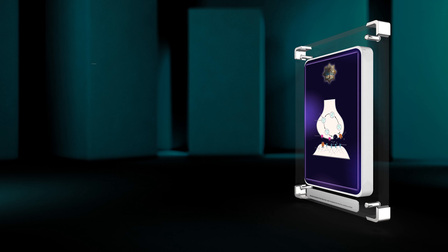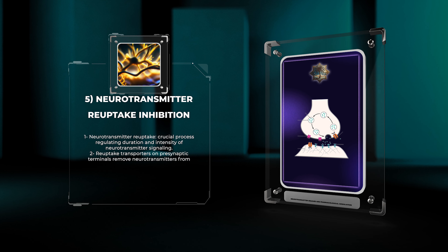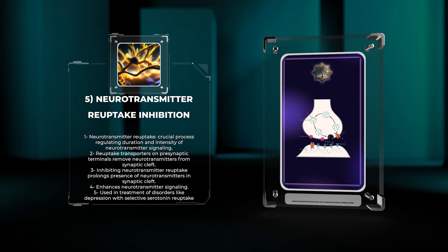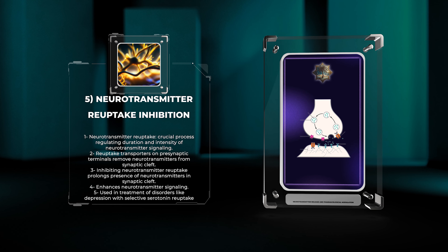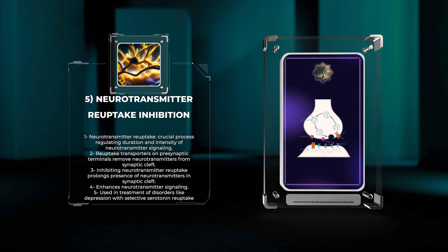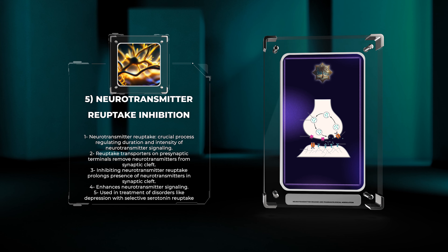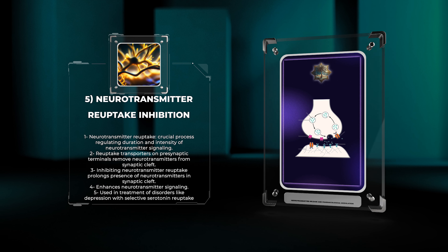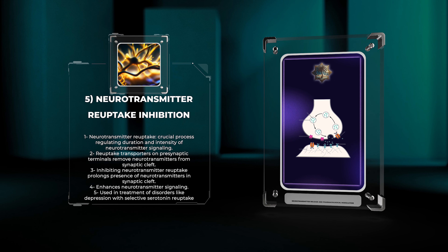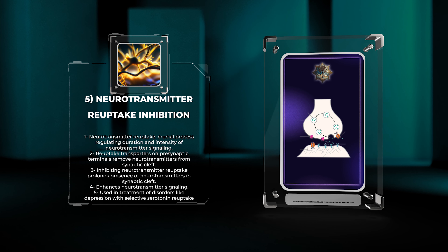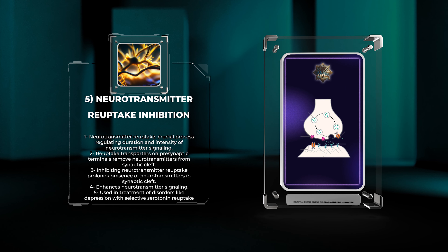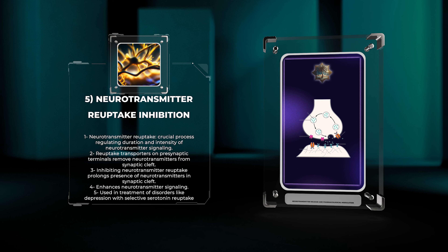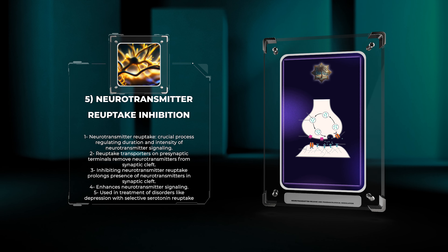Neurotransmitter reuptake is a crucial process that regulates the duration and intensity of neurotransmitter signaling. Reuptake transporters located on presynaptic terminals remove neurotransmitters from the synaptic cleft, effectively terminating their action. Pharmacological agents that inhibit neurotransmitter reuptake can prolong the presence of neurotransmitters in the synaptic cleft, leading to enhanced signaling. This mechanism is harnessed in the treatment of disorders such as depression through the use of selective serotonin reuptake inhibitors, SSRIs.